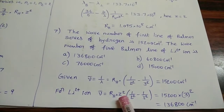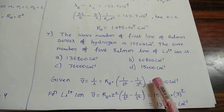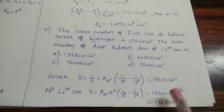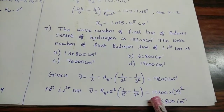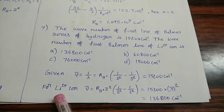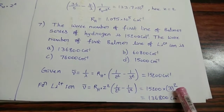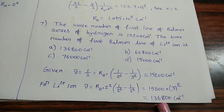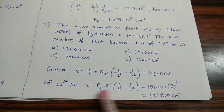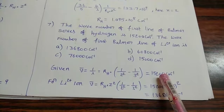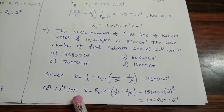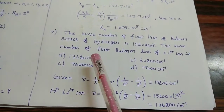The only difference between the two expressions is Z². So we can write the Li2+ wave number as 15,200 × Z². For lithium, Z = 3, so substituting gives 15,200 × 9. We don't need to recalculate everything from scratch — using the hydrogen value we can get the answer quickly. Option A is the answer.